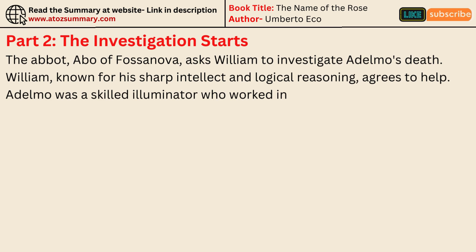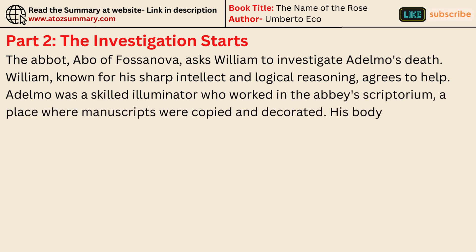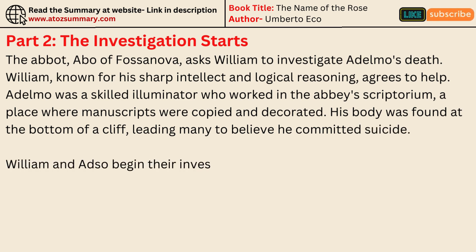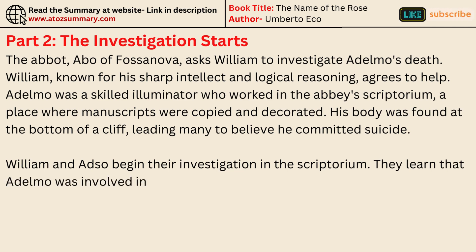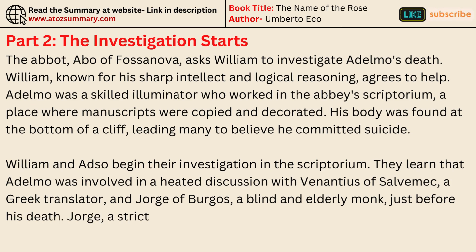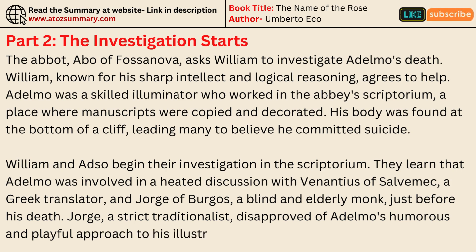Adelmo was a skilled illuminator who worked in the abbey's scriptorium, a place where manuscripts were copied and decorated. His body was found at the bottom of a cliff, leading many to believe he committed suicide. William and Adso begin their investigation in the scriptorium. They learn that Adelmo was involved in a heated discussion with Vinancius of Salvamec, a Greek translator, and Jorge of Burgos, a blind and elderly monk, just before his death. Jorge, a strict traditionalist, disapproved of Adelmo's humorous and playful approach to his illustrations, considering them blasphemous.